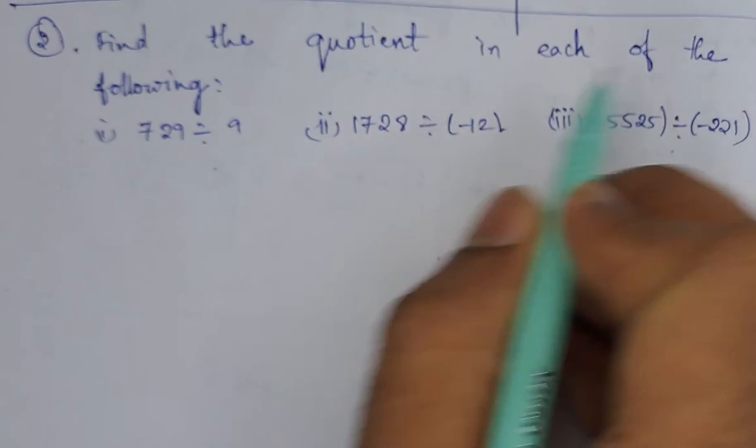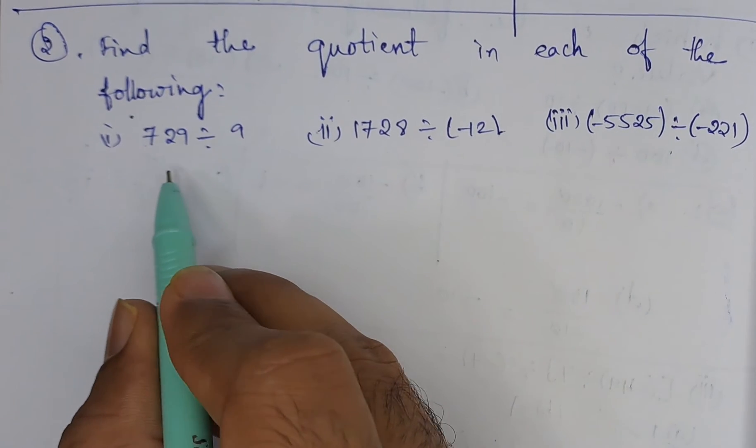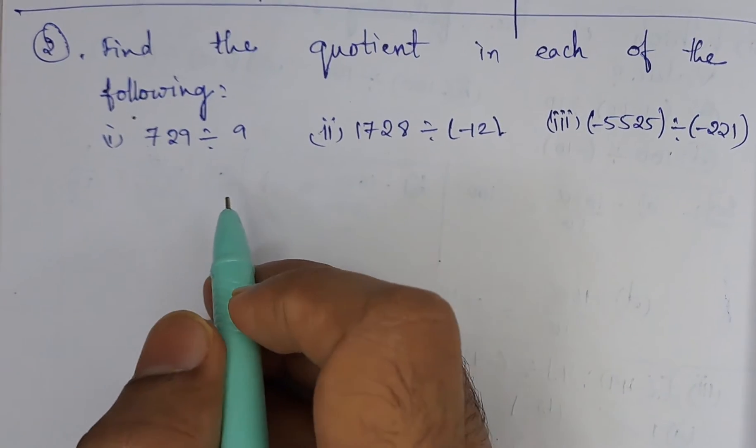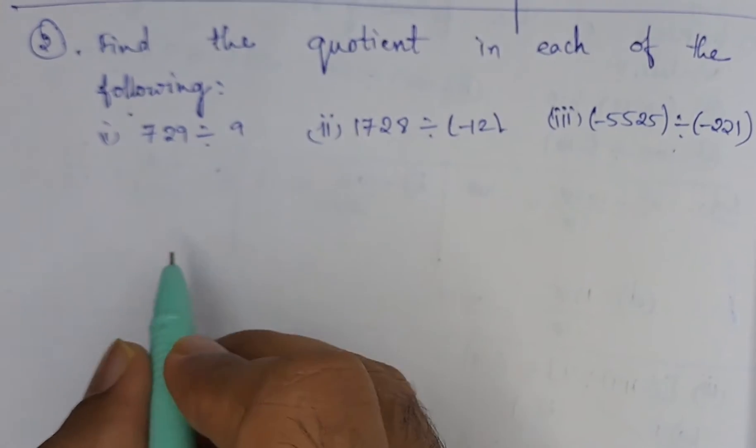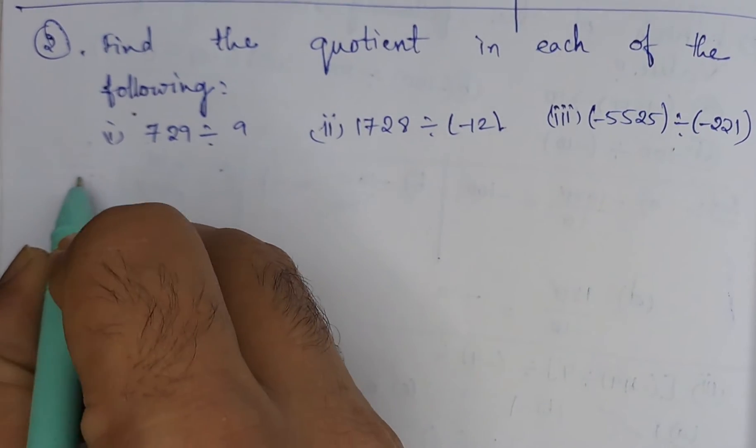Second problem: find the quotient in each of the following. They have given some bits we need to divide them and we need to find out their quotients. So let us start with the first bit.